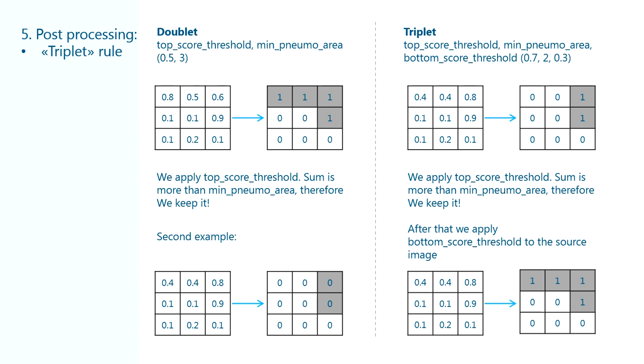However, there are two suspicious gray pixels. So if you use doublet, we cannot get pneumothorax with area less than min pneumothorax area. Moreover, top score threshold is used for classification and prediction task.